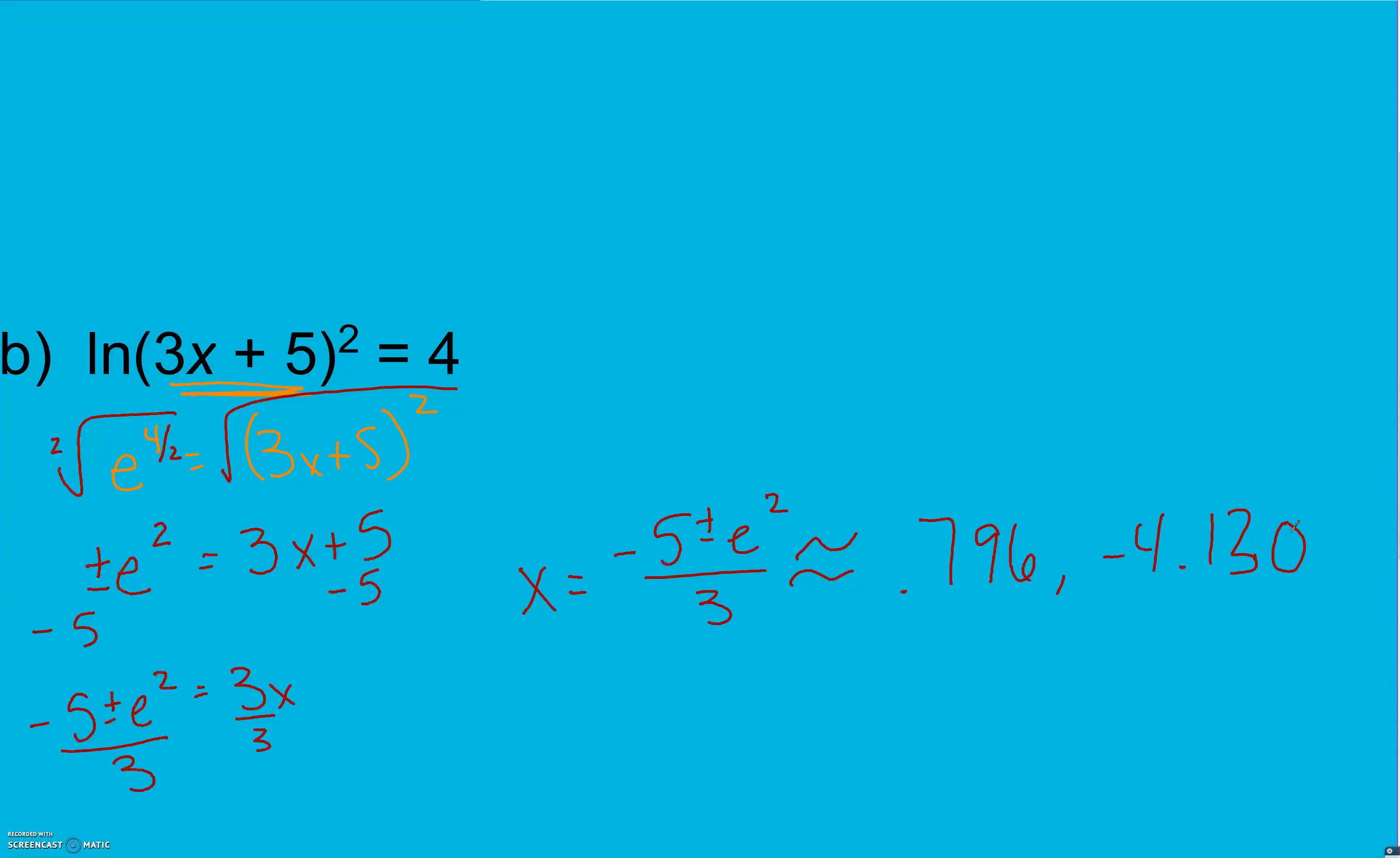Double check both of those to make sure they work. So we're going to plug them back in. 3 times 0.796 plus 5, square it, gives me 54.58. ln of second answer gives me 3.9997, so that one works. Same idea here with the negative 4.130, I'm going to take that times 3, add 5, square it, take ln of it. ln second answer and I get 4.00025547, which again is very close to 4, so we're going to say that that answer works as well. So both of those two will work.